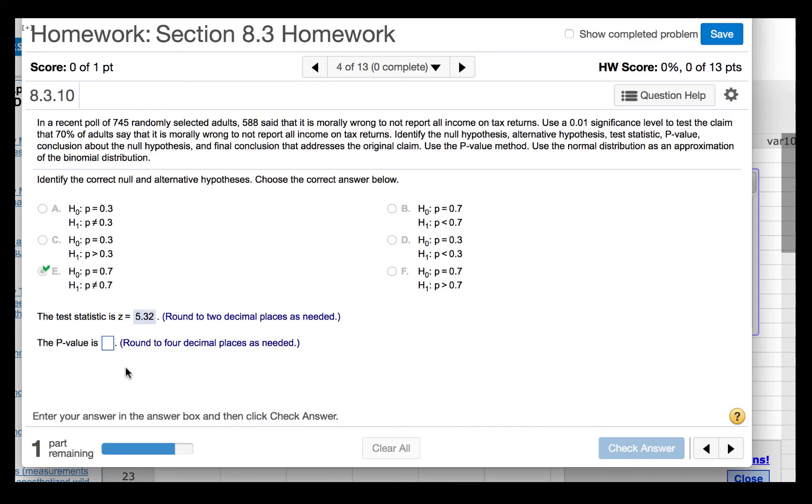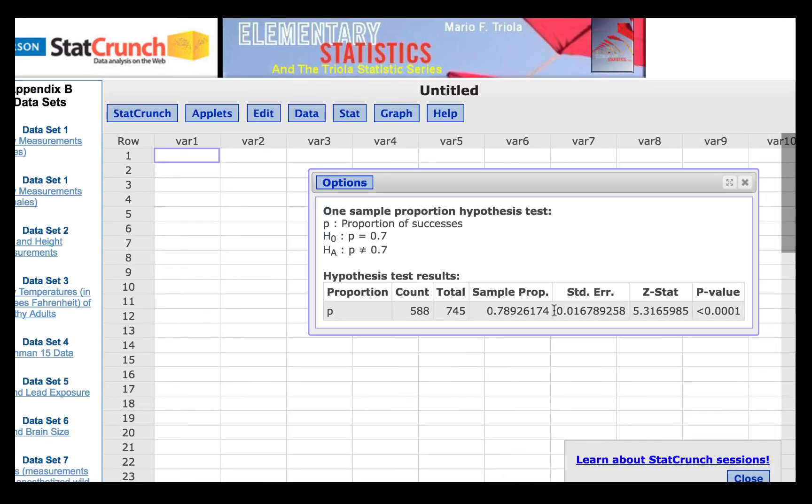Then we are to find the p-value and round it to four decimal places. The output box in StatCrunch gives us the p-value as less than 0.0001, so there is no significance out to four decimal places. We will enter our p-value as 0.0000.